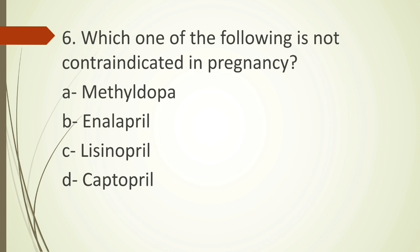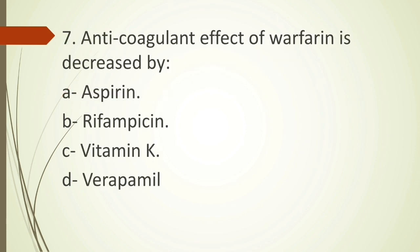Sixth question: which one of the following is not contraindicated in pregnancy — option A methyldopa, option B enalapril, option C lisinopril, option D captopril? The only antihypertensive drug safer to use in pregnancy is methyldopa. All other antihypertensive drugs, whether ACE inhibitors, angiotensin receptor blockers, or others, are contraindicated in pregnancy. The correct answer is option A, methyldopa.